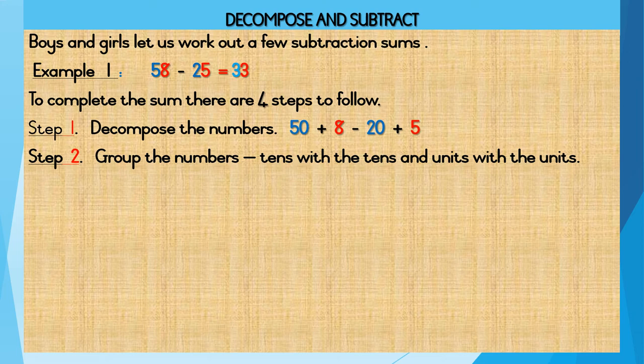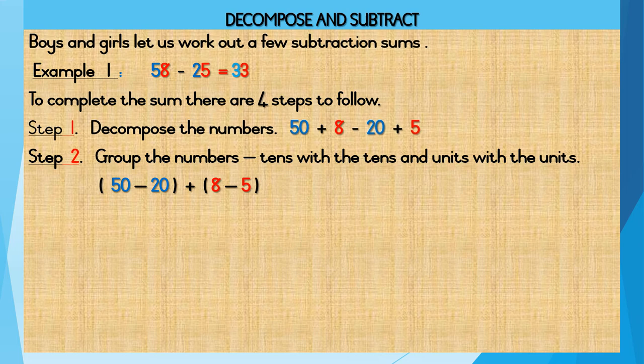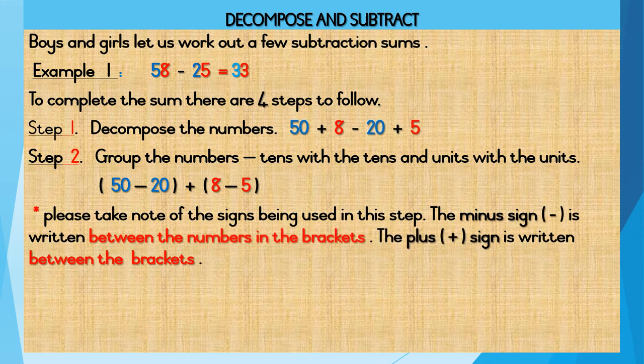Step 2: Group the numbers, that is the tens with the tens and units with the units. You will notice that in this step we have introduced two sets of brackets. The first set of brackets is your tens brackets and your second set is your unit bracket. In your tens bracket you will have 50 minus 20, in your unit bracket you will have 8 minus 5. So step 2 will read 50 minus 20 plus 8 minus 5. Please take note of the signs being used in this step. The minus sign is written between the numbers in the brackets. The plus sign is written between the brackets.